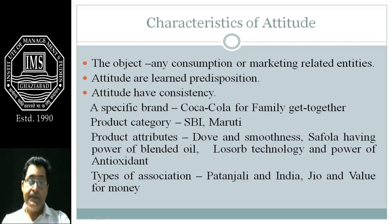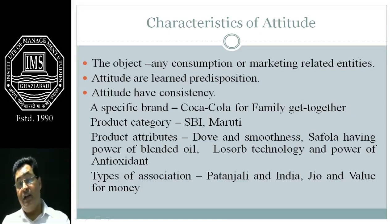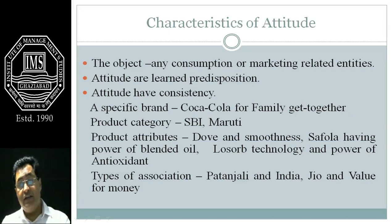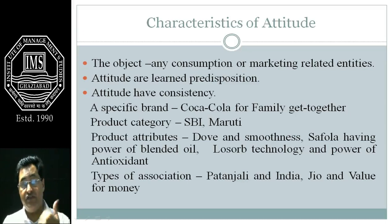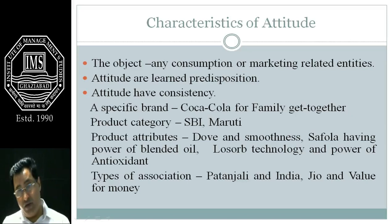When we talk about attributes, it is about the instant benefits a product gives you. For example, Dove soap — whenever you see a Dove advertisement, it always talks about smoothness. You rub Dove on one side of your skin and leave the other side untreated, and after some time when you touch it you feel the smoothness where you applied Dove. So it offers the instant benefit of smoothness.